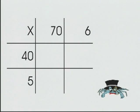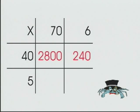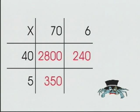Now we multiply. 70 times 40 equals 2,800. 6 times 40 equals 240. 70 times 5 equals 350. And 6 times 5 equals 30.